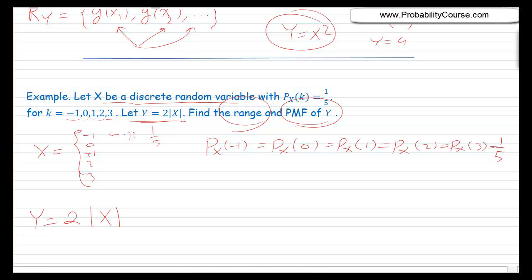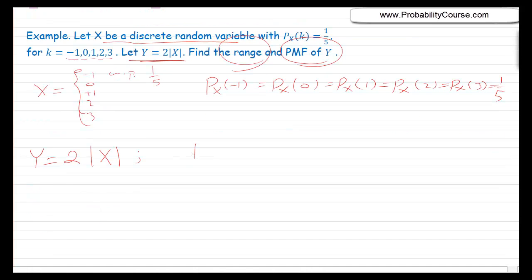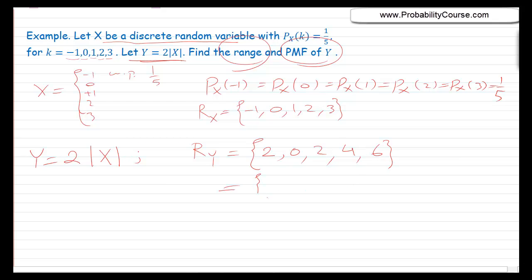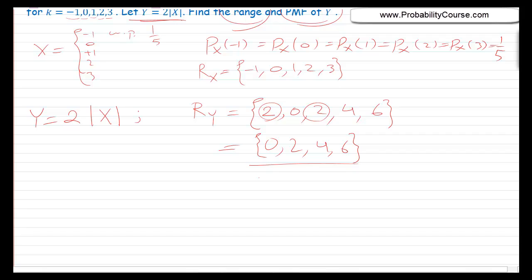Let's find the possible values of Y. The range of X is minus 1, 0, 1, 2, and 3. If X equals minus 1, then Y equals 2 times the absolute value of minus 1, which is 2. If X equals 0, then Y equals 0. If X equals 1, then Y equals 2. If X equals 2, then Y equals 4. If X equals 3, then Y equals 6. Since 2 is repeated, we simplify: the range of Y is just 0, 2, 4, 6 — so there are 4 possible values for Y, and we need to find the probabilities of these values.